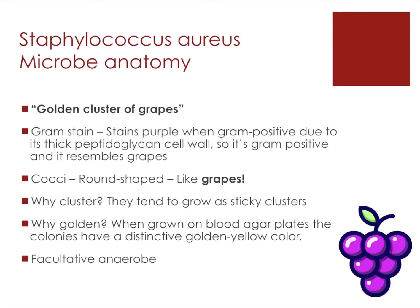Let's break this down. In terms of its gram stain, it stains purple due to its thick peptidoglycan cell wall. It's cocci, so this means it's round-shaped, just like grapes, and they tend to live in sticky clusters.